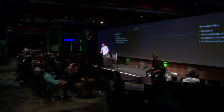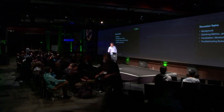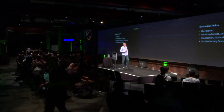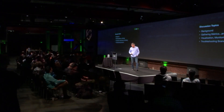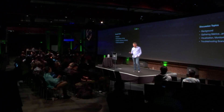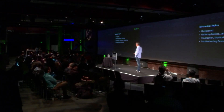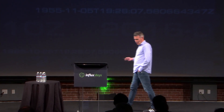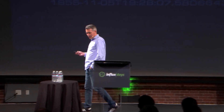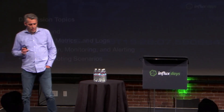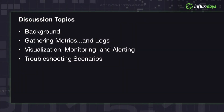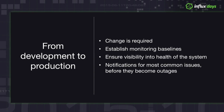We're going to talk a little bit of background — why are we having this talk, why has this come up, monitoring the enterprise edition. Then we're going to talk about gathering logs and metrics. Dylan did an amazing job talking through Telegraph and how to use that, so the logging portion is super important. Then we'll talk about how we're going to visualize, monitor, and do alerting based on the things we collected, and we'll look at a few troubleshooting scenarios.